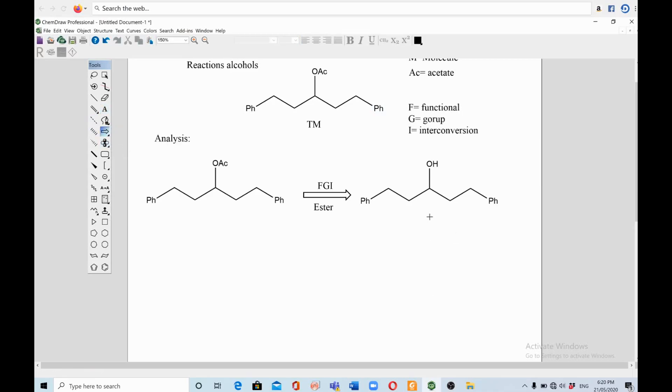So we can make this alcohol by doing disconnections from both sides. These are C-C disconnections, and we will get two equivalents of two molecules of this functionality.